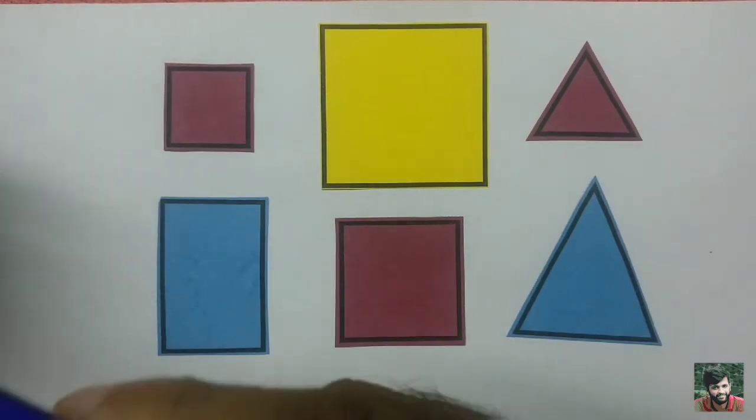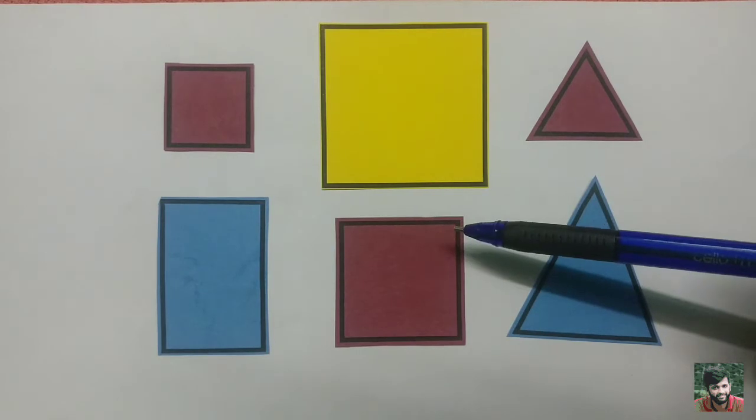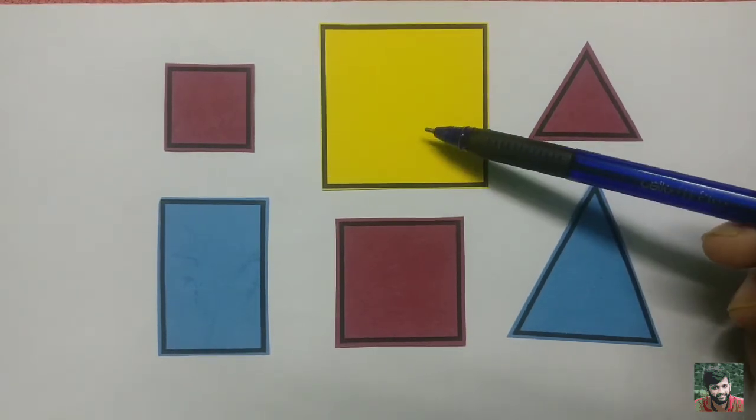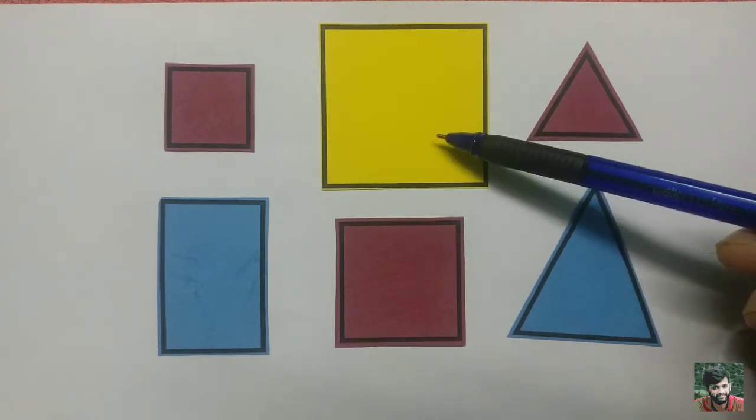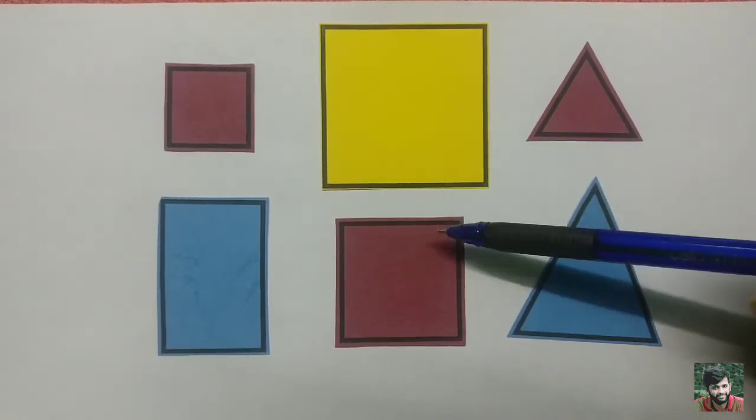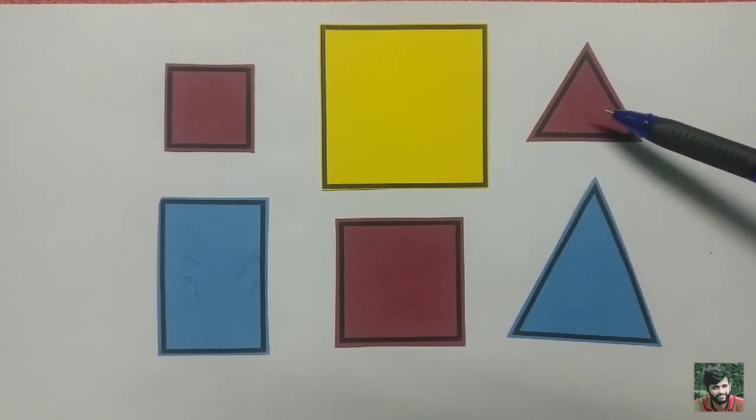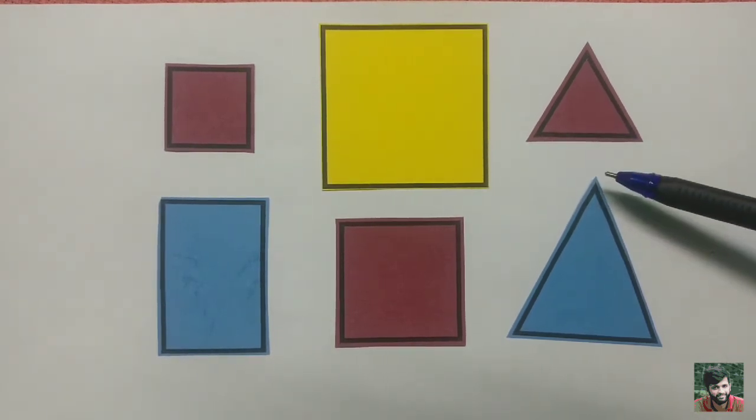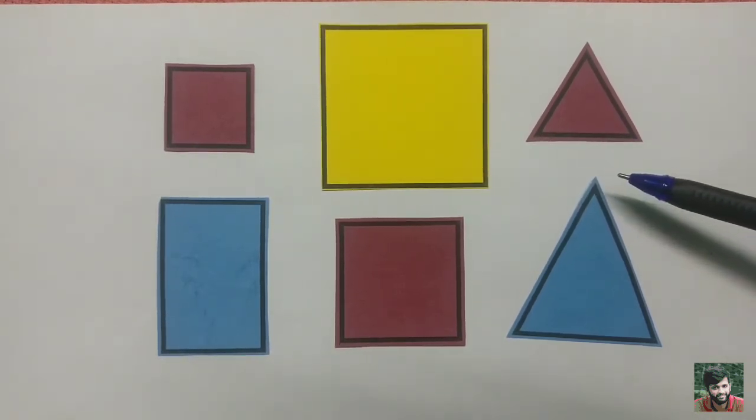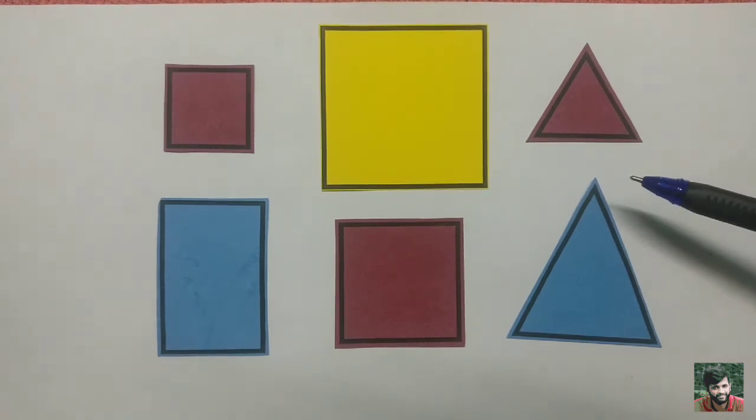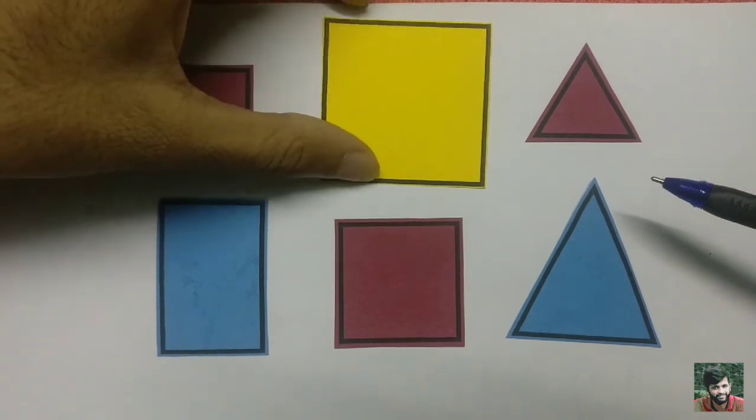These two figures, these two figures are similar. This is a square, this is also a square, so I can call them similar. But I can't call them congruent because their size is different. In these cases the triangles are similar, but they are not congruent.